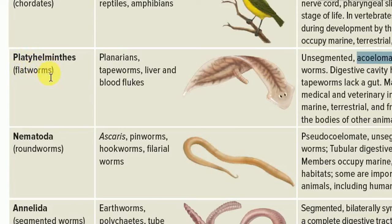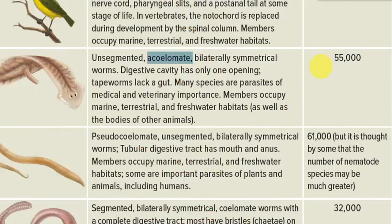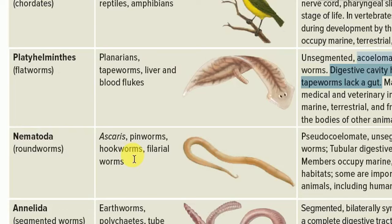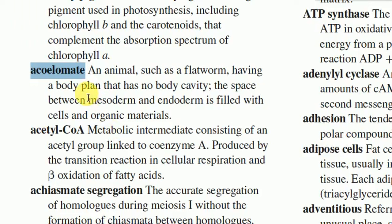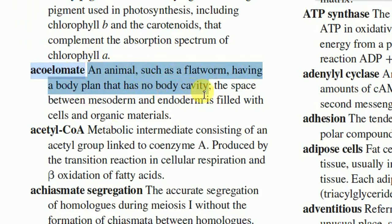Platyhelminthes, that means flatworms — examples include planarians, tapeworm, liver fluke, and blood fluke. They are unsegmented, acoelomate, bilaterally symmetrical worms, and the digestive cavity has only one opening. In summary, acoelomate animals such as flatworms have a body plan with no body cavity; the space between mesoderm and endoderm is filled with cells and organic materials.